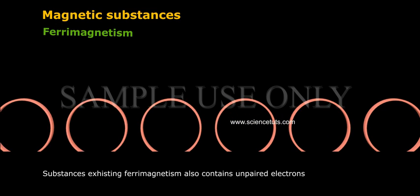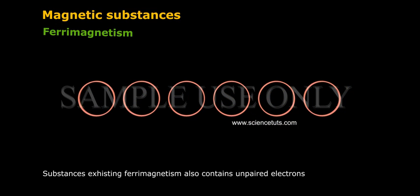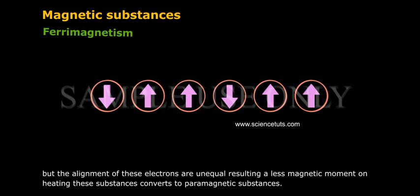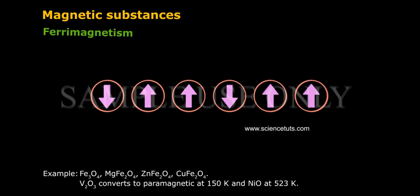Ferrimagnetism: Substances exhibiting ferrimagnetism also contain unpaired electrons but the alignment of these electrons are unequal resulting in less magnetic moment. On heating these substances convert to paramagnetic substances. Examples: Fe3O4, MgFe2O4,